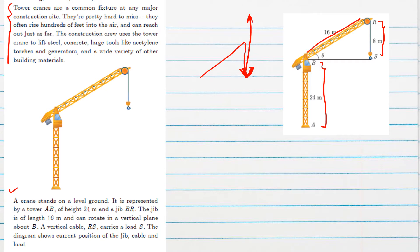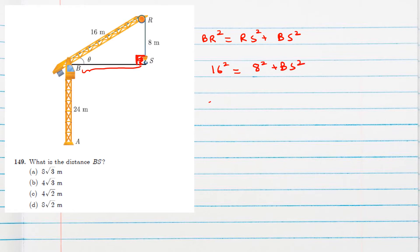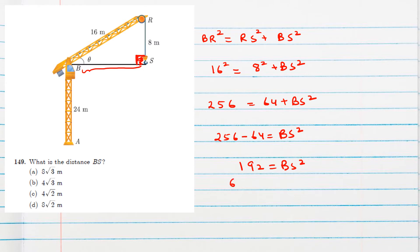Question 1: What is the distance BS? Since the load is traveling in a vertical direction, we can consider this as 90 degrees and apply Pythagoras theorem. BR squared equals RS squared plus BS squared. BR is 16 and RS is 8, so 256 equals 64 plus BS squared. Therefore BS squared equals 192, which can be written as 3 times 64, giving BS equals 8 root 3 meters.